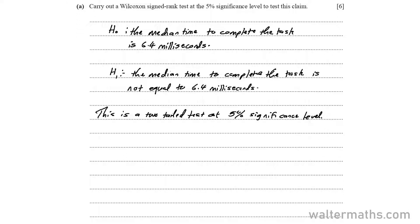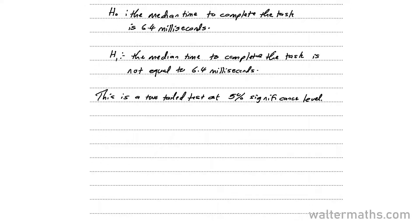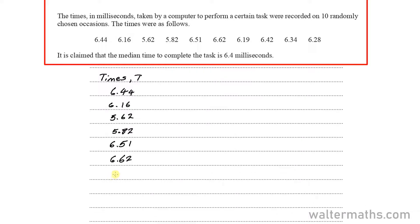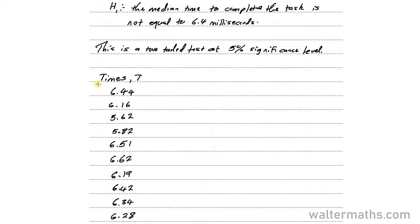Okay, so here I'm now carrying out the procedure for the Wilcoxon signed rank test. I'm going to make some table here, starting with a column on the times, which are represented by T. And from the data given in the question, the entries are 6.44, 6.16, 5.62, 5.82, 6.51, 6.62, 6.19, 6.42, 6.34, and lastly we have 6.28.